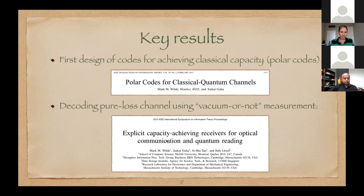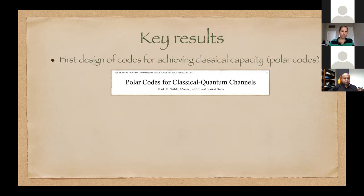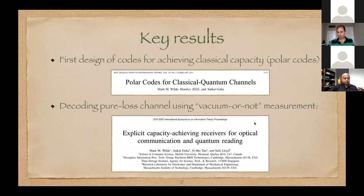Another work Saikat and I did was for the pure loss channel. In principle, a collective measurement can be performed to achieve capacity. A natural question is: what is that measurement and how do you implement it? In 2012 we addressed this question and showed that the problem boils down to whether you can perform a measurement that projects onto the all-vacuum state of N optical modes, or projects onto the complement. For the capacity-achieving scheme, the post-measurement state in the non-vacuum case has the vacuum subtracted out. This is very challenging to implement experimentally, and questions remain about how to do it.